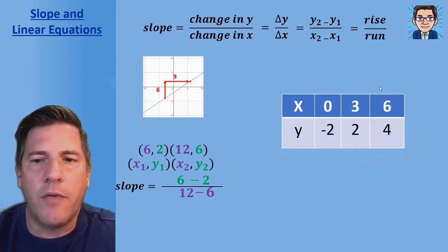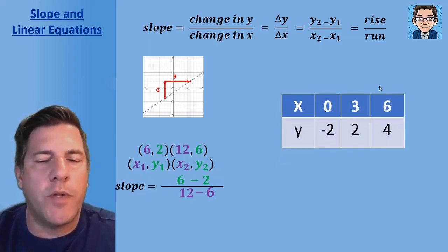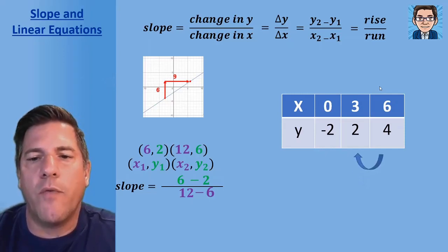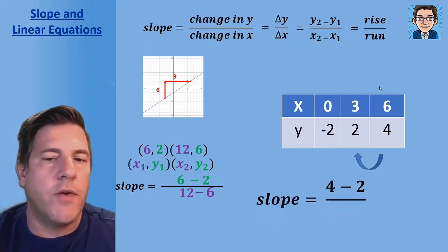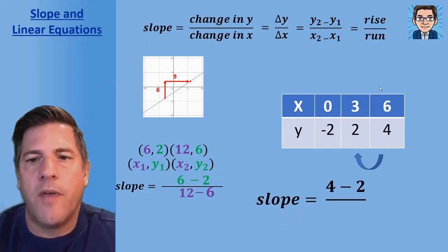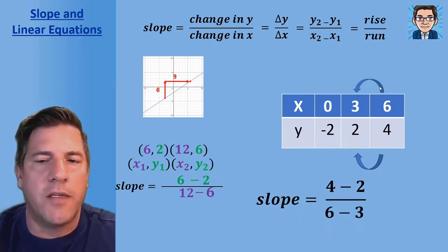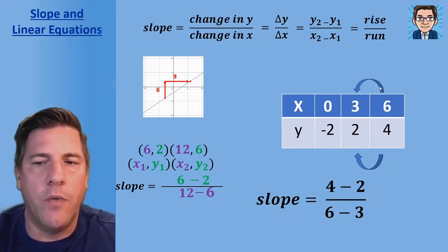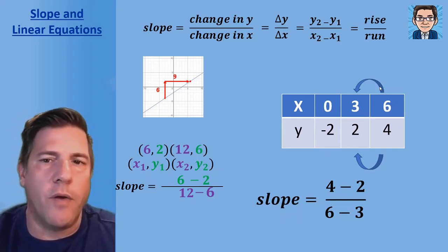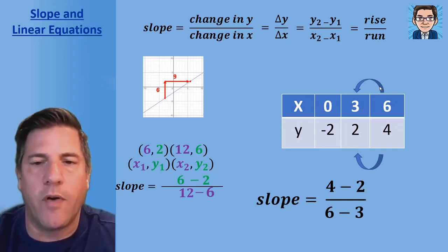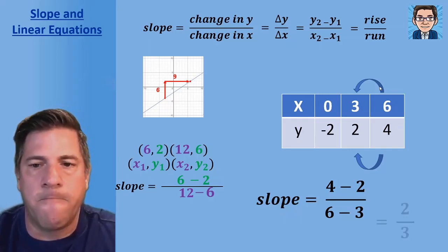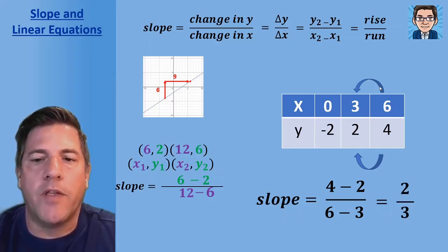If we have a table of values, it's very similar to working with two points — we just pick two of the points. The difference in y values gives the numerator, and the difference in x values gives the denominator. One thing to keep in mind: we've got to go in the same direction. If we do four minus two in the numerator, we do six minus three in the denominator — don't switch it around. That gives us two over three.